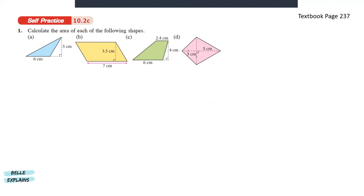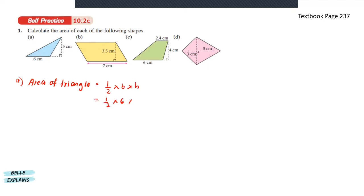Calculate the area of each of the following shapes. Let's start with A. Since this is a triangle, let's first state the formula: 1 over 2 times base times height. The base here is 6 centimeters and the height is 5 centimeters, so that gives us 15 centimeters squared.